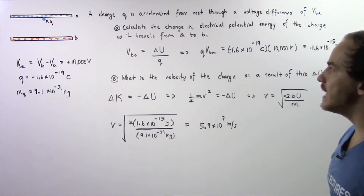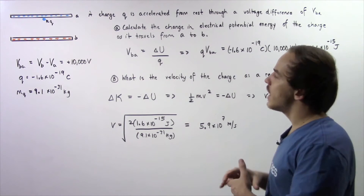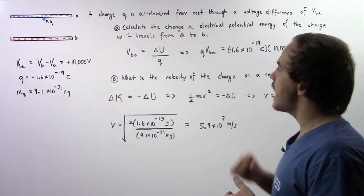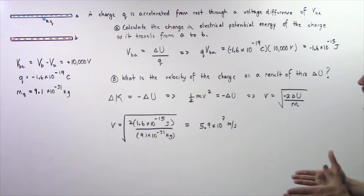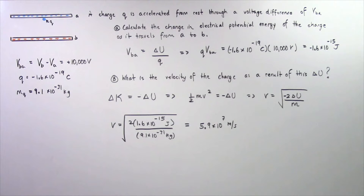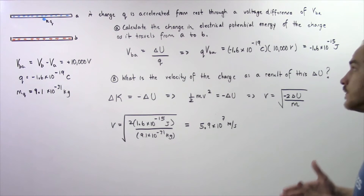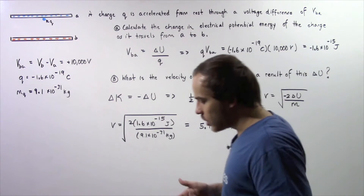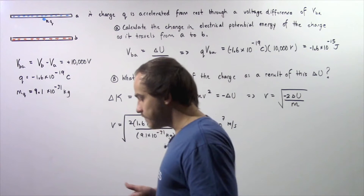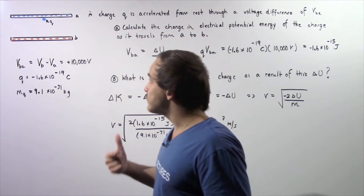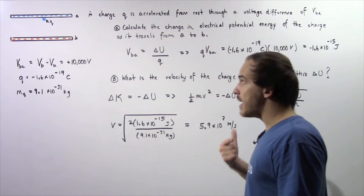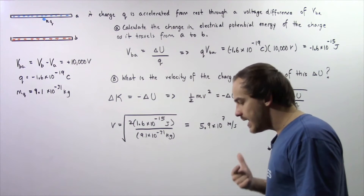Let's begin by looking at section A: calculate the change in electric potential energy of our charge as it travels from location A to location B. As our electric charge is traveling from A to B,